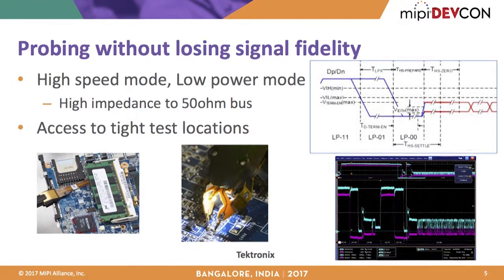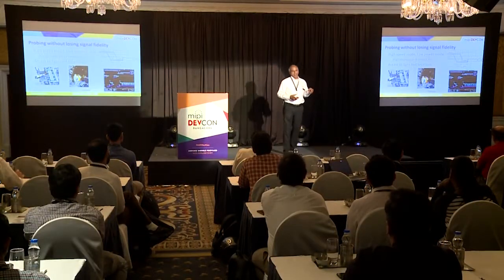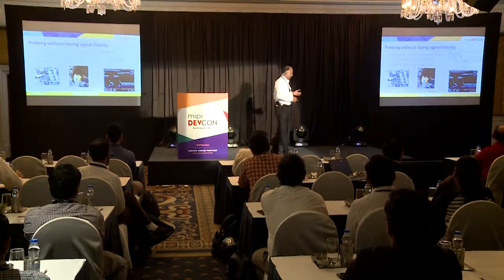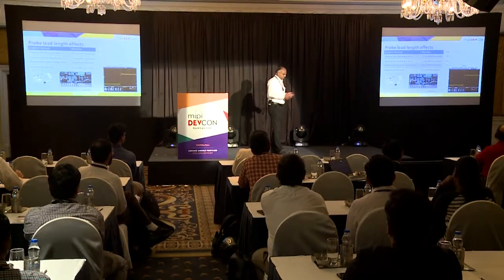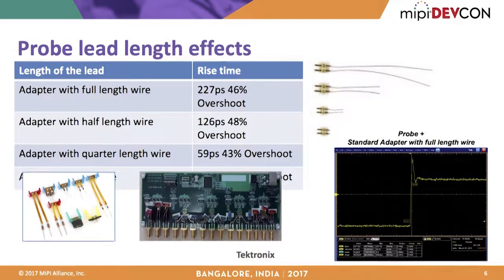In D-PHY, during LP-HS transition, the termination impedance of the receiver changes from high impedance to 50 ohms. The probe must tolerate this termination change during signal acquisition. Probe accessories and extenders are critical for getting the probe close to the chipset pins. Probes with lead resistors offering good high impedance without affecting signal integrity have been designed for this purpose.